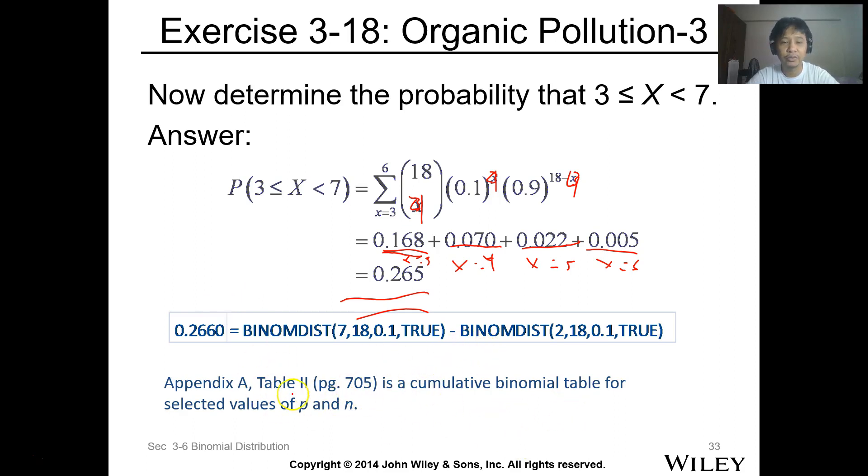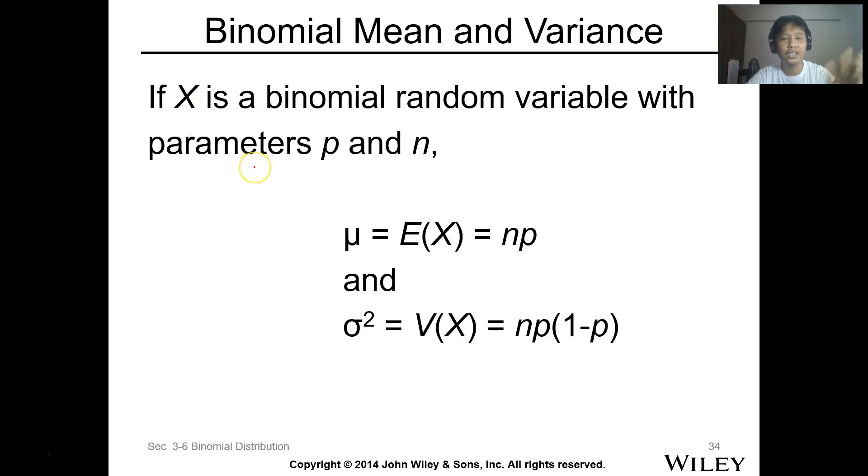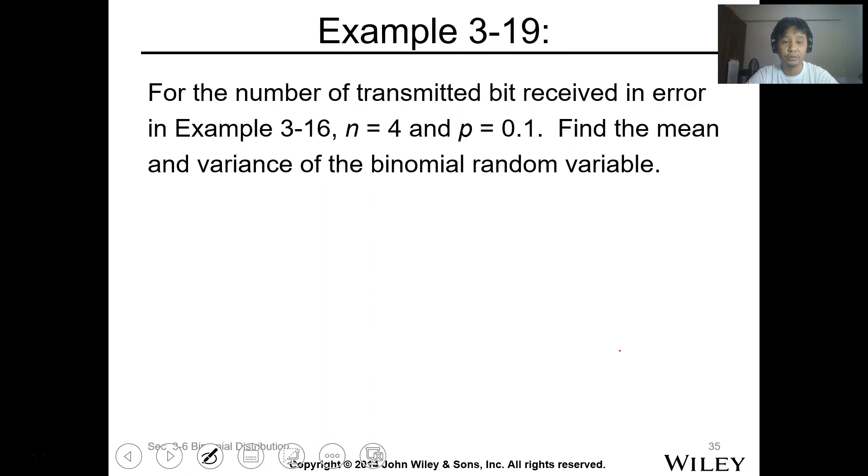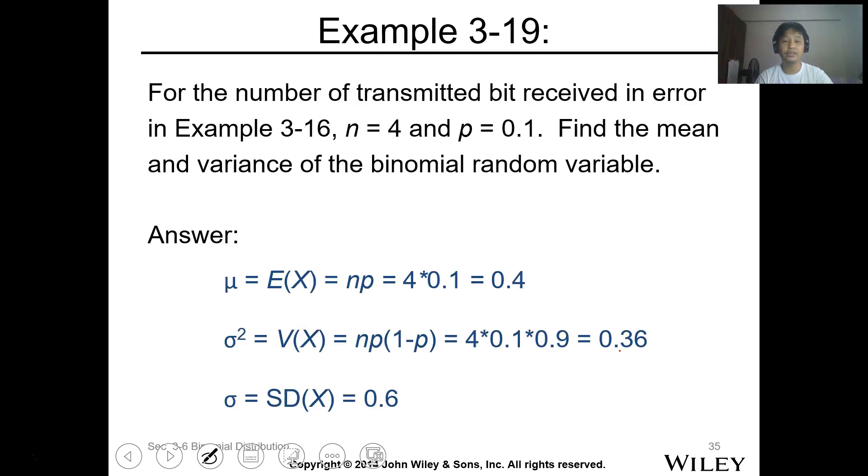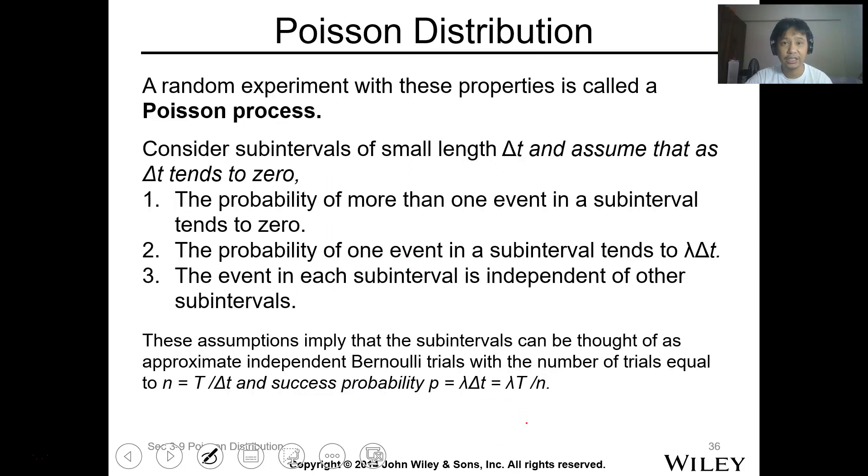You can use table 2 for the cumulative binomial table for selected values, but you can just calculate it. Binomial mean and variance: if X is a binomial random variable with parameter p, the expected value is just np, and the variance will be np times (1 minus p). For the number of transmitted bits received in error in example 3-16, n is 4 and p equals 0.1. Find the mean and variance of the binomial random variable. For the expected value, mean is np. Using the formula, 4 times 0.1, that's 0.4. For the variance, np times (1 minus p), using the formula, 4 times 0.1 times 0.9, that's 0.36. And for the standard deviation, just take the square root. This is square root of 0.36. So we'll end here.